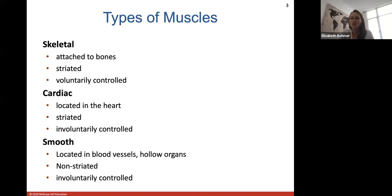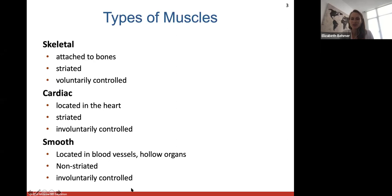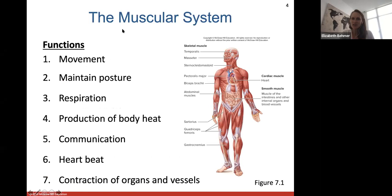Cardiac muscle tissue is located in the walls of your heart. It's also striated, and it is involuntarily controlled, meaning your heart contracts without you telling it to — it's subconsciously controlled. Smooth muscle is found in the blood vessels and the walls of your hollow organs. It is non-striated, so it has a smooth appearance, and it's also involuntarily controlled, meaning you're not telling your digestive tract or stomach when to push food along.